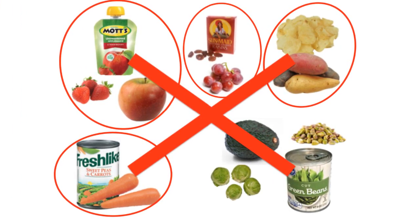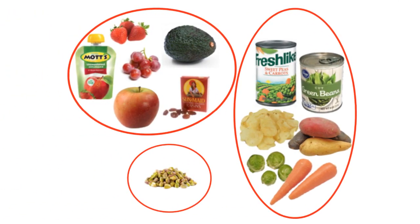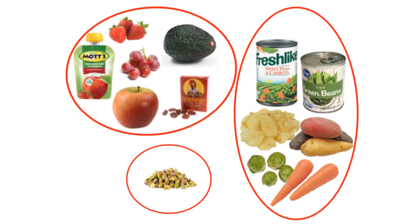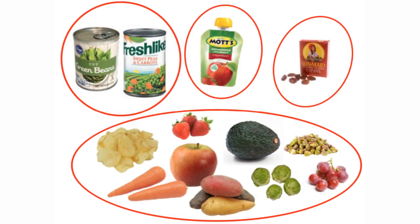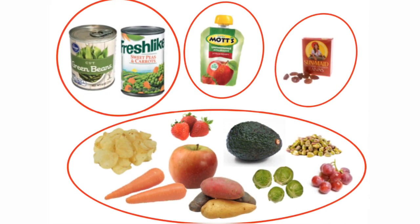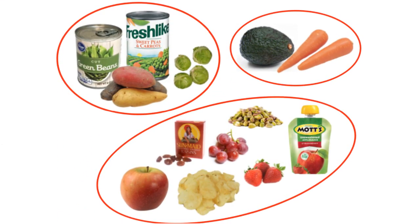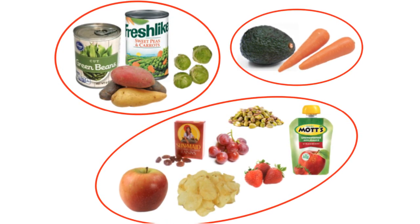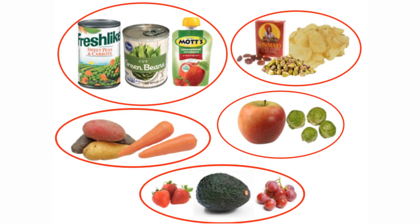You could organize everything by color, but you decide to start over instead. You consider other organizational schemes, such as classifying the items by type of food — such as fruits, vegetables, and nuts — classifying the items by type of packaging, classifying by how much each item needs to be prepared before it's ready to eat, or classifying by perishability.